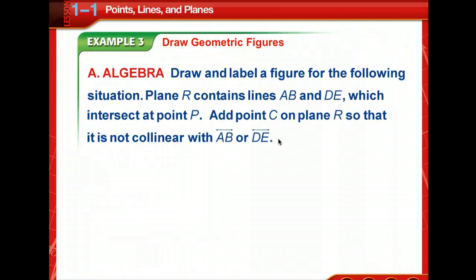Oh, now we get to draw geometric figures. Okay. Draw and label a figure for the following situation. Plane R. So start thinking about what a plane looks like. Yep, that's that flat surface. And we're going to label it R. And it contains line AB and DE. Okay, we can do that. Which intersect at point P. Oh, interesting. So we don't have parallel lines. We've got some intersecting lines. Add point C on plane R so that it is not collinear with line AB or line DE.